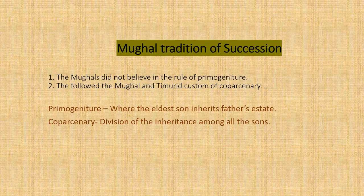The next topic is the Mughal tradition of succession. The Mughals did not believe in primogeniture, where the eldest son inherits everything from his father's estate. Instead, they believed in coparcenary inheritance, meaning the father's estate is distributed equally among all the sons. So if a king had four sons, whatever he had would be distributed equally among all of them. This is the Mughal tradition of succession.